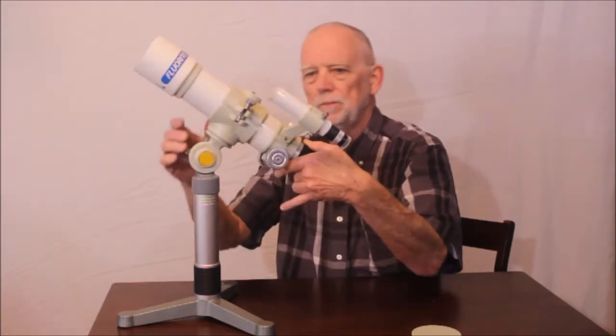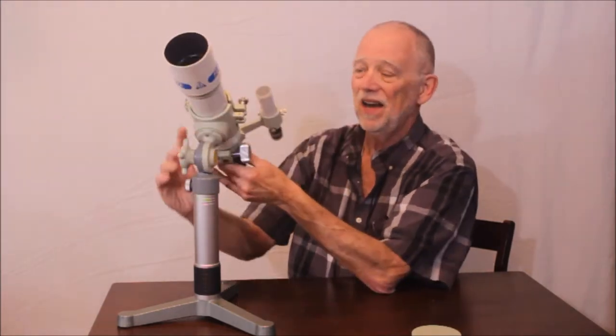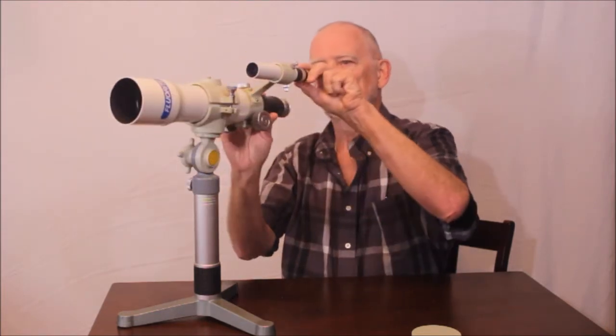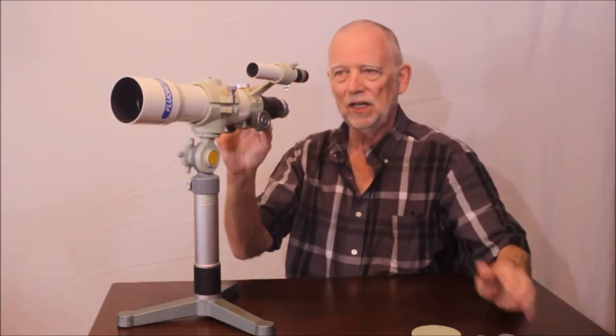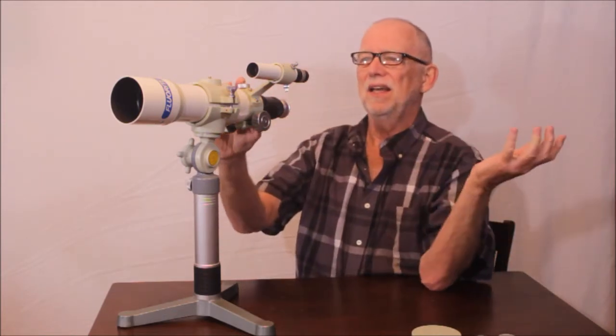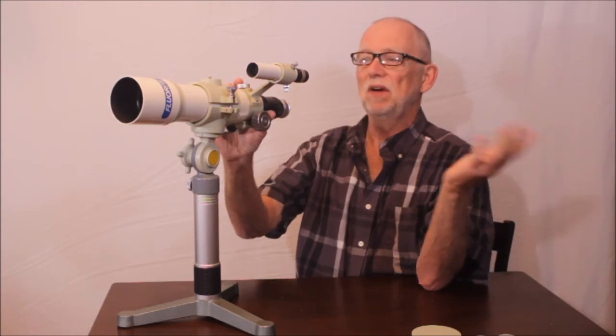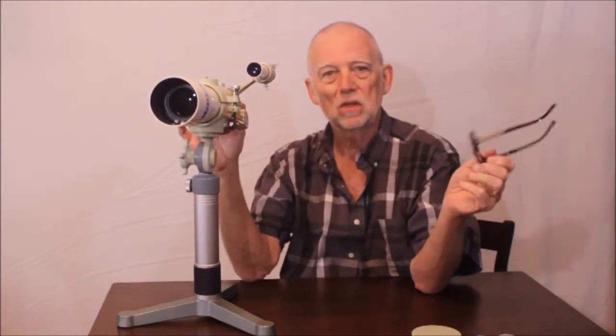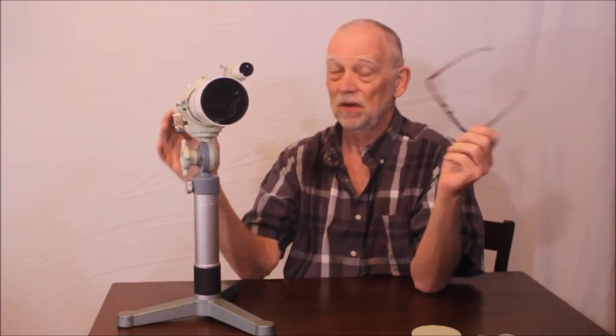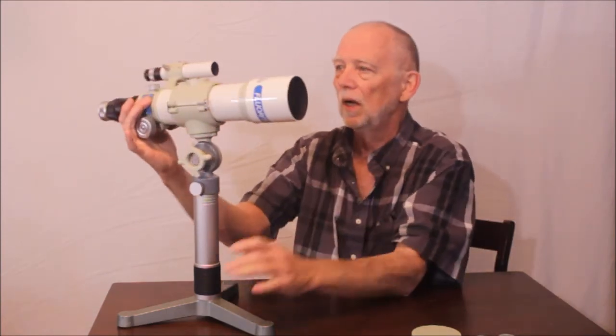It's got a superb little 5 by 24 finder. Cutest little thing. And of course a Takahashi 5 by 24 finder is like, oh sorry 5 by 25. It's like anyone else's at least 6 by 30 maybe 8 by 50. The quality of their finders, they by far exceed the quality of any other finder I've ever seen. So it's a more than adequate finder even though it sounds diminutive.